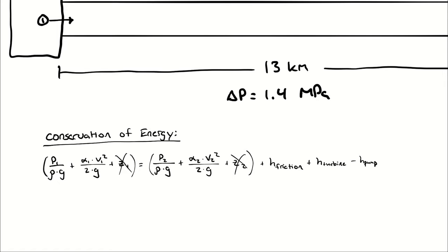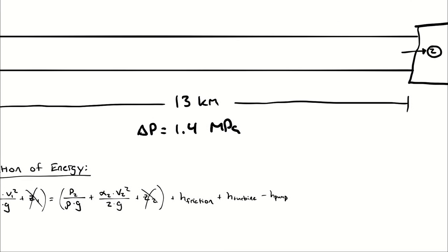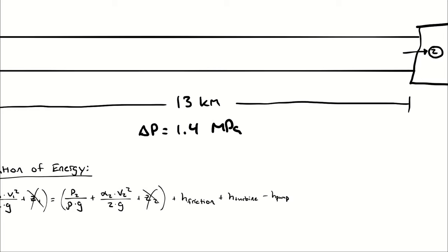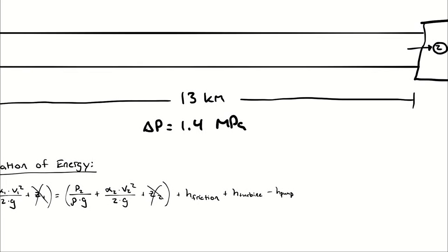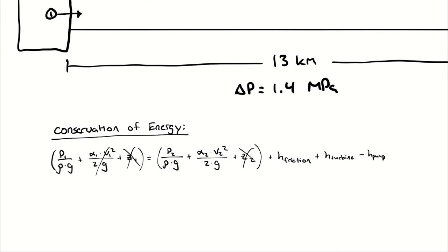Since we have incompressible flow (constant density) and the same mass flow rate, the volumetric flow rate at State 1 equals the volumetric flow rate at State 2. Since volumetric flow rate equals average velocity times cross-sectional area, and the area is the same, V1 must equal V2. We know the change in pressure, so we can keep that term.